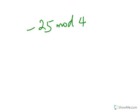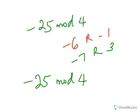What if we have negative 25 mod 4? You might say negative 6 remainder negative 1, but we have a negative remainder and we don't want that. Instead we say negative 7 remainder 3, because 4 times negative 7 is negative 28, and negative 28 plus 3 gives negative 25. So negative 25 mod 4 equals 3, rather than saying negative 25 mod 4 equals negative 1.